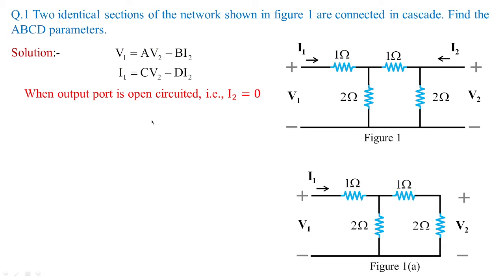Using the normal approach from previous classes: when the output port is open-circuited, making I2 equal to 0, we have V1 equal to A·V2 and I1 equal to C·V2. The figure 1 changes to figure 1A. So I can get V1 in terms of I1, and V2 also in terms of I1.